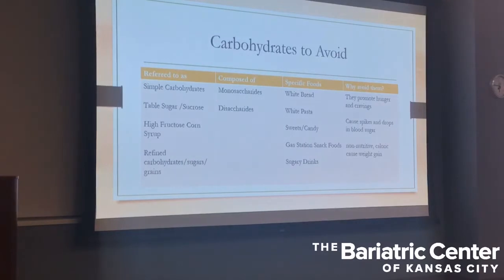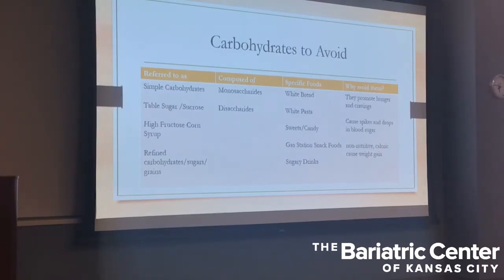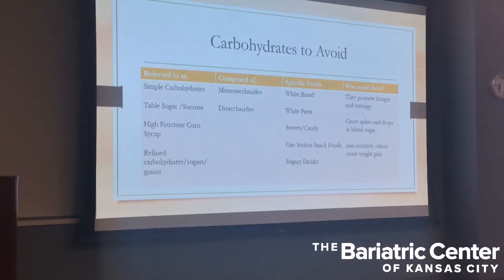Here's a summary of the carbohydrates to avoid. Simple carbohydrates can go by the names table sugar, sucrose, high fructose corn syrup, refined carbohydrates, refined sugars, or refined grains. They're made up of monosaccharides and disaccharides — the simplest forms — and are found in white bread, white pasta, sweets, candy, gas station snack foods like chips and crackers, and sugary drinks. Why do we want to avoid them? They promote hunger and cravings, cause spikes and drops in blood sugar, are non-nutritive, just have calories, and are likely to cause weight regain.